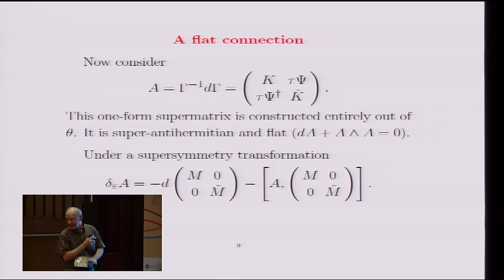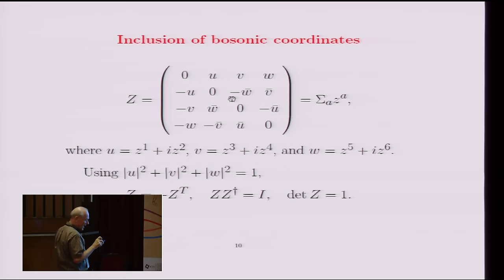So here's my supermatrix of one-form. This defines what I'm calling K and K tilde and psi and psi dagger. And since I told you what gamma is, this is completely explicit. And because this has this pure gauge form, it's a flat connection, dA plus A wedge A is equal to 0. And this thing is made entirely out of theta. I still haven't brought in the bosonic coordinates yet.